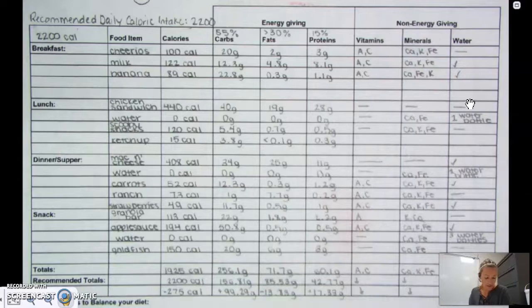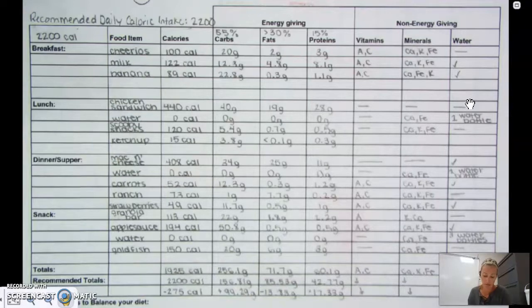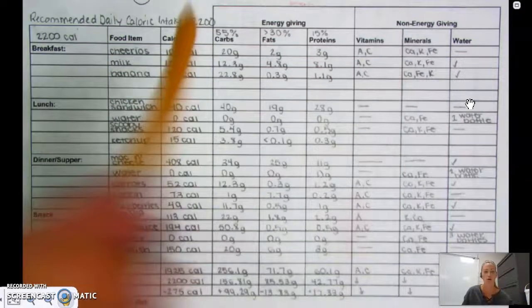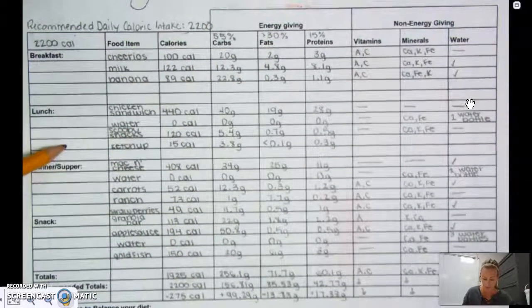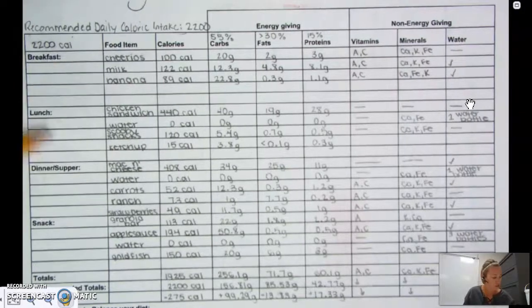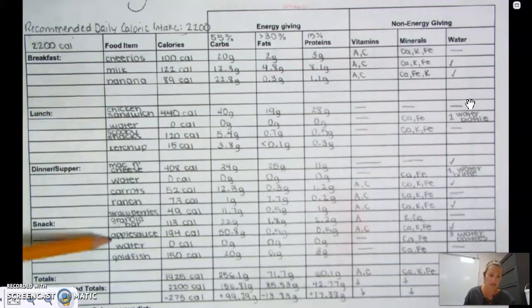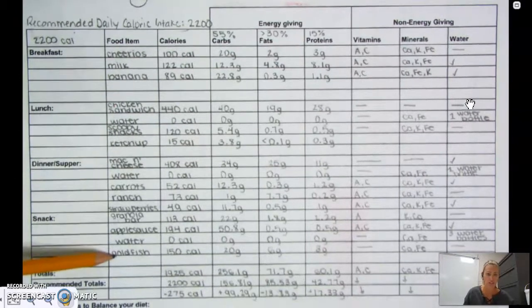What we're asking you to do is reflect back to your diet, what you ate yesterday, record what you ate for breakfast, lunch, dinner, and snack, everything that you ate the entire day, everything that you drank the entire day. You're going to record on this sheet right here. Once you get your food items listed, I would start by listing all your food items out.